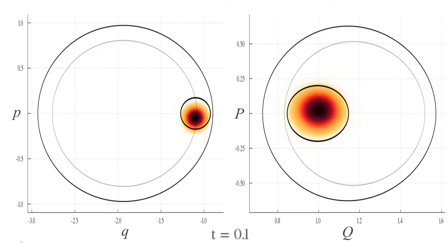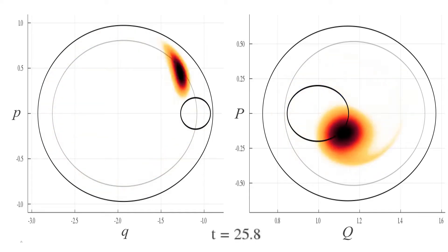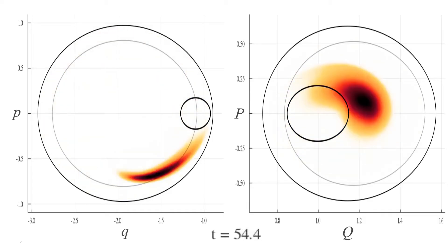Initially the ensemble moves as a whole, leaving the initial region, marked with the inner black outline. At this energy, the system behaves regularly, so the ensemble comes back to the initial region periodically.